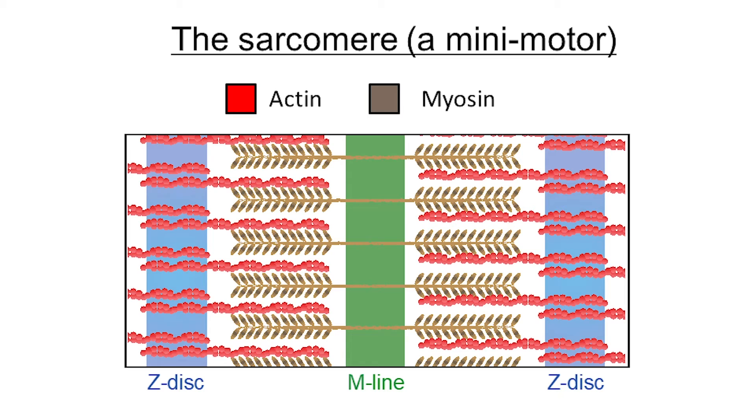Sarcomeres, of course, don't consist of just one molecule of actin and myosin, but thousands of molecules of actin and myosin, all arrayed parallel to each other. So this is what generates the force that allows you to move.